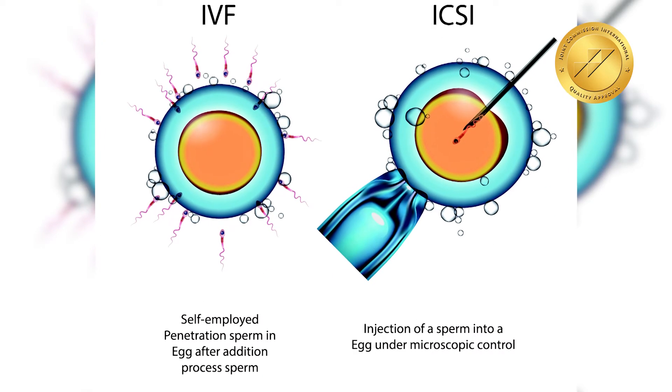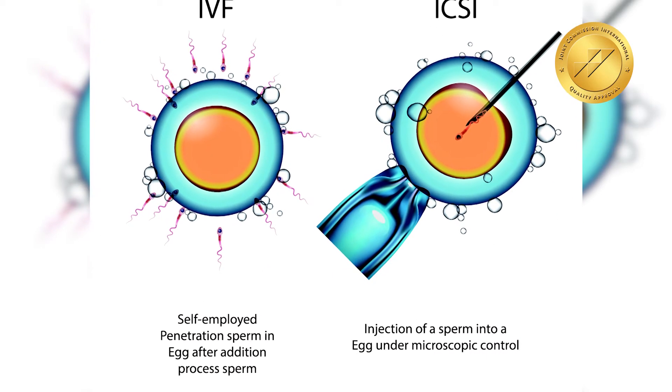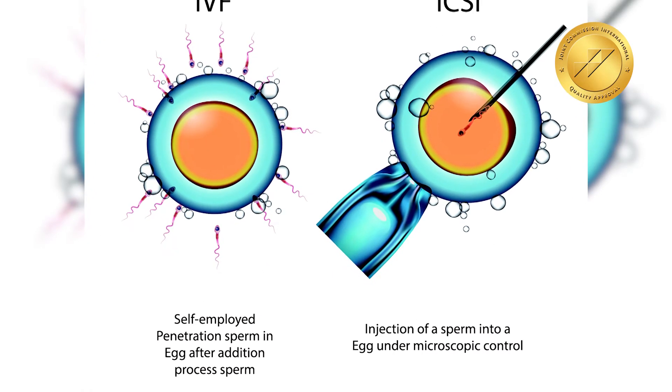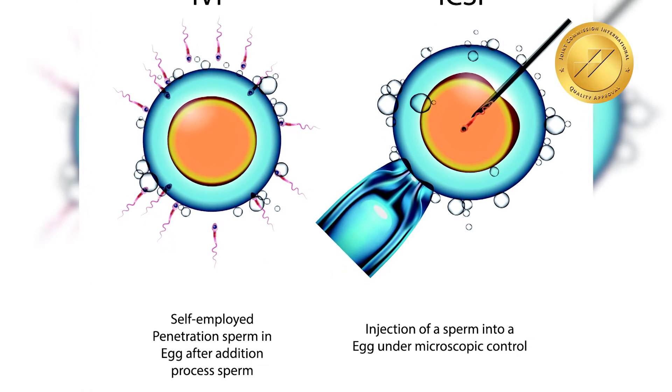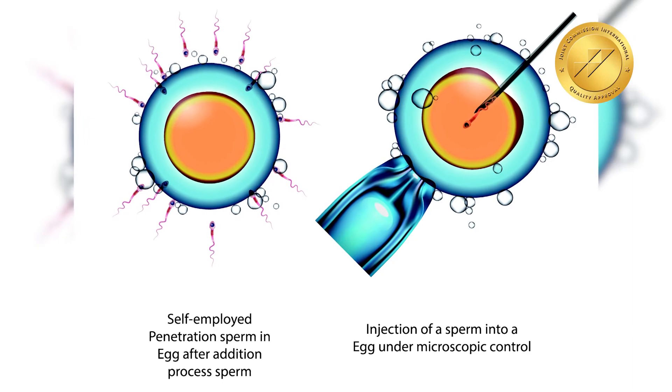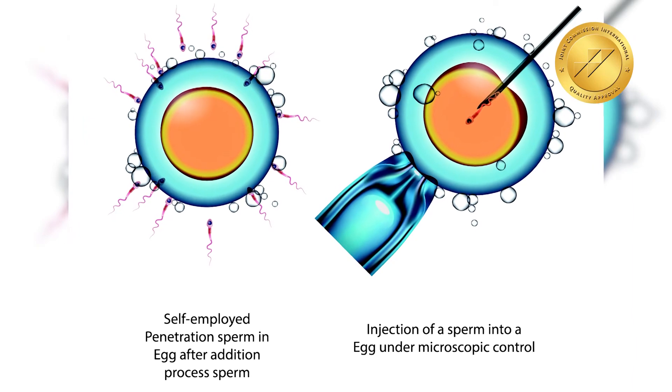Whereas in ICSI, an embryologist selects a competent sperm and injects it into the egg for fertilization. This is called intracytoplasmic sperm injection.